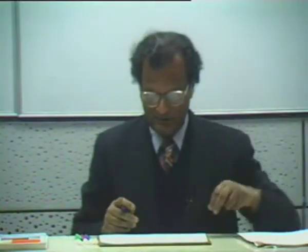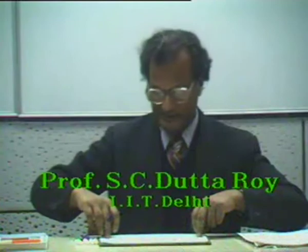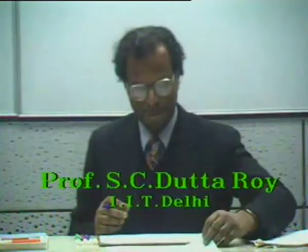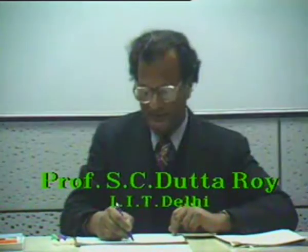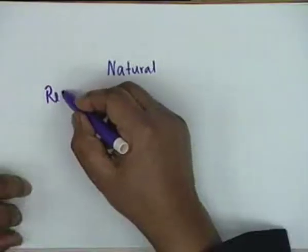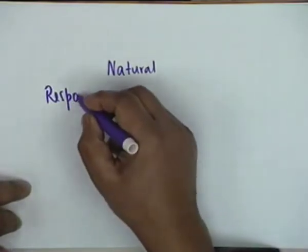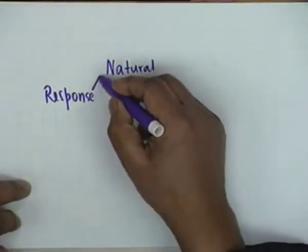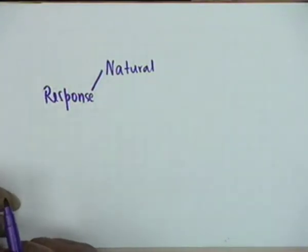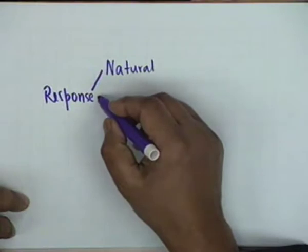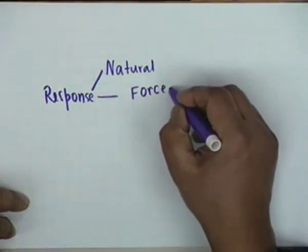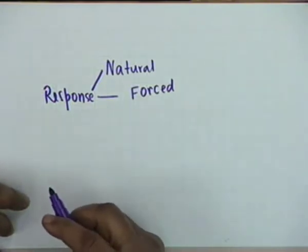This is the twelfth lecture on Natural Response of Electrical Circuits. We have already defined the various kinds of responses that an electrical circuit can have. Natural response is the one which arises due to internal stored energies, with the circuit left to itself to settle. There are no external forces or external excitations. If there are external excitations, the response is called a forced response.